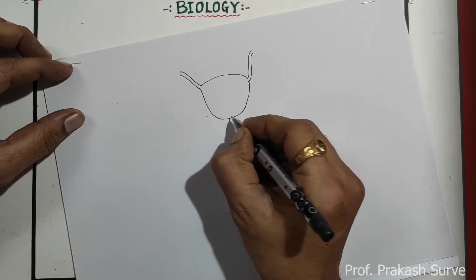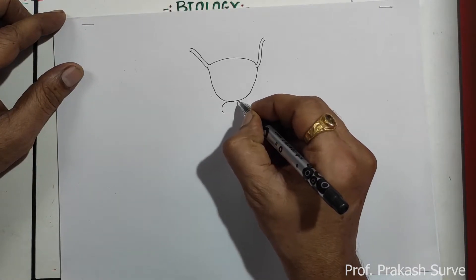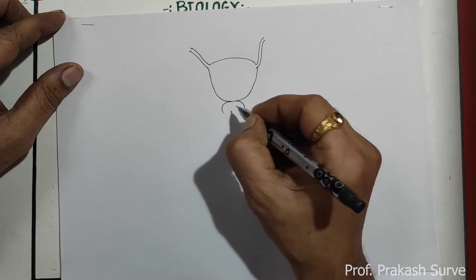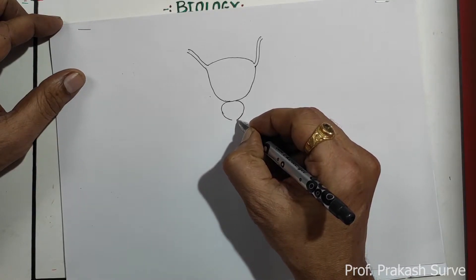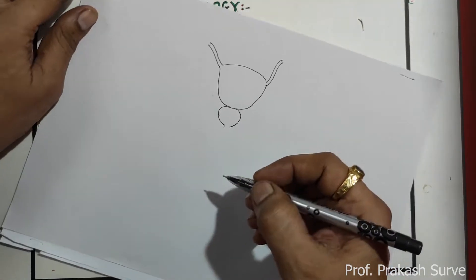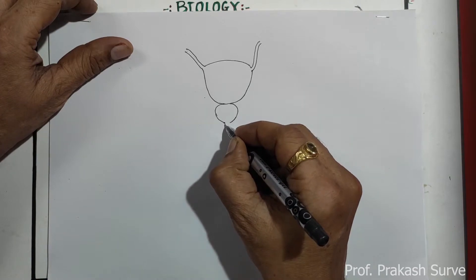So this is the bladder. Below that we'll draw prostate gland. This line will bring it down straight.